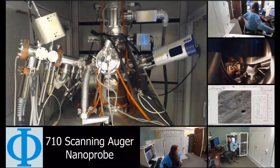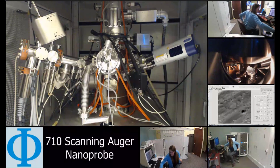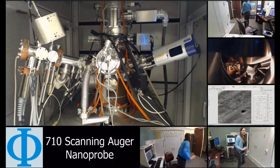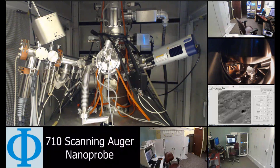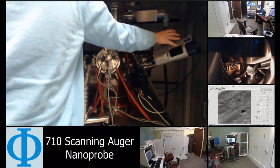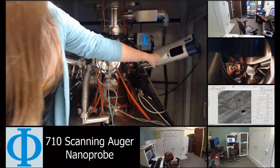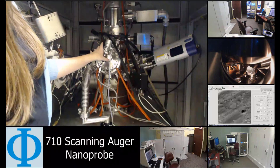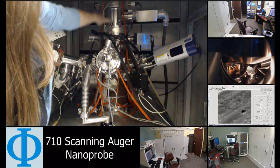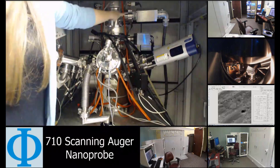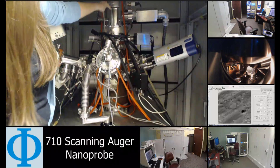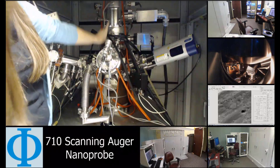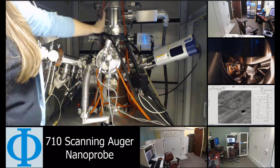I just want to go back and show you the system. Inside the system, you can see we have a lot of attachments here, and Jens kind of discussed that briefly in his talk. I just wanted to point out — hopefully you can see my hand here — but this is our EDS detector. This is our ion gun for sputtering, depth profiling, and sputter cleaning. The electron source and analyzer are up here on this top axis.